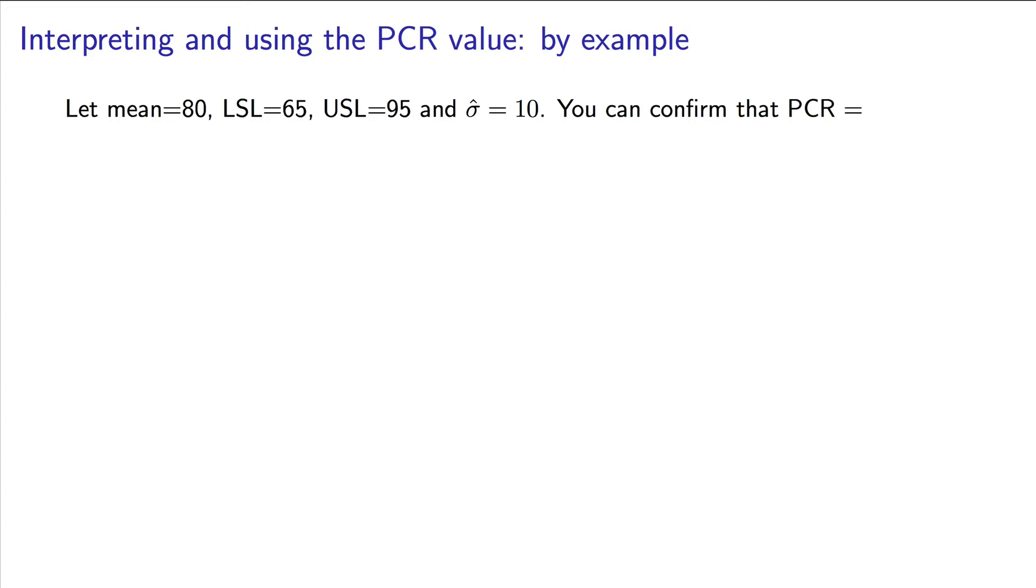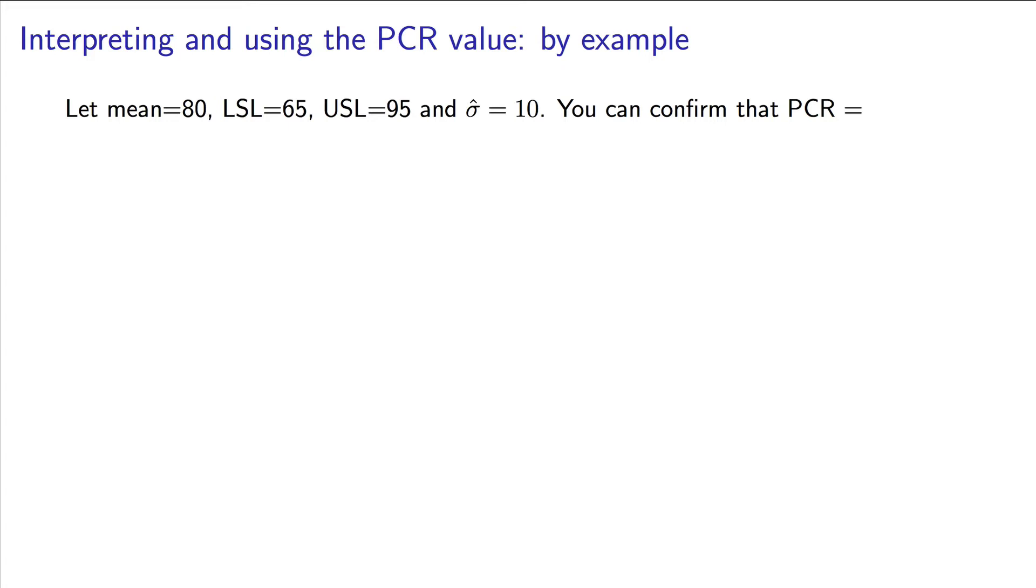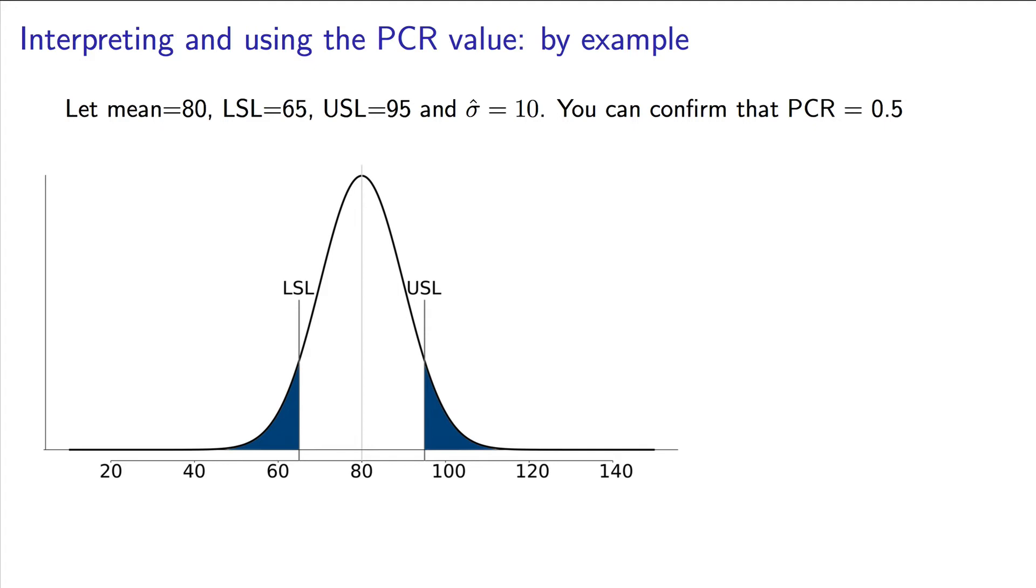Let's try this out. Assume the mean of our process is 80, the lower specification limit is 65, the upper specification limit is 95, and our estimate of sigma is 10. Calculate the process capability ratio for that system. You should have got a value of 0.5. So let's interpret that. And it is very helpful to draw a diagram to illustrate the system. A system where the mean is 80 and has standard deviation of 10 units, assuming it's normally distributed, would have this shape. Let's now superimpose those lower and upper specification limits on there.